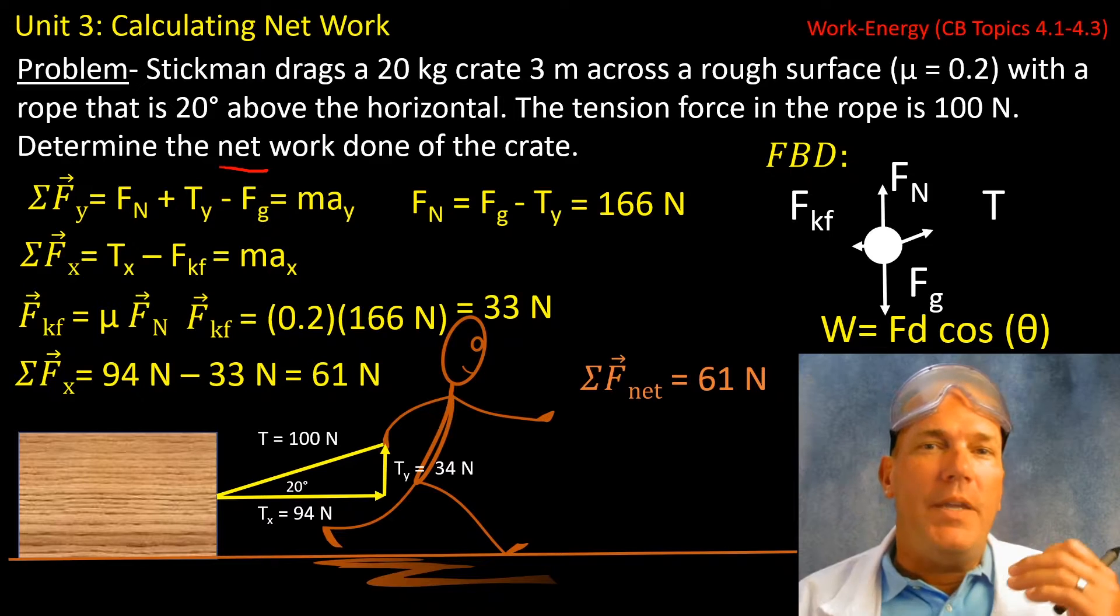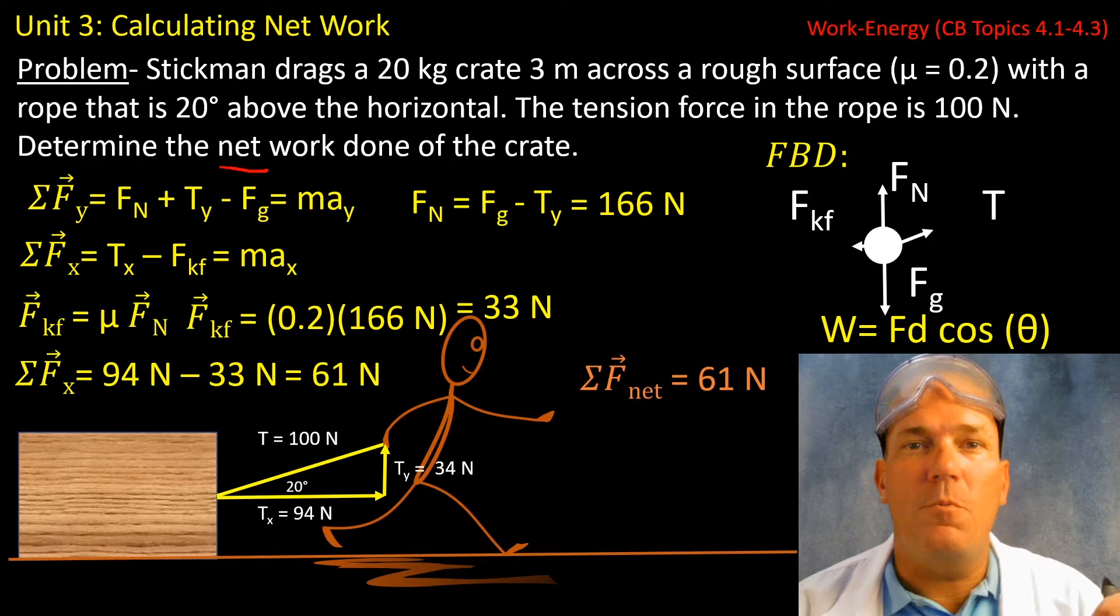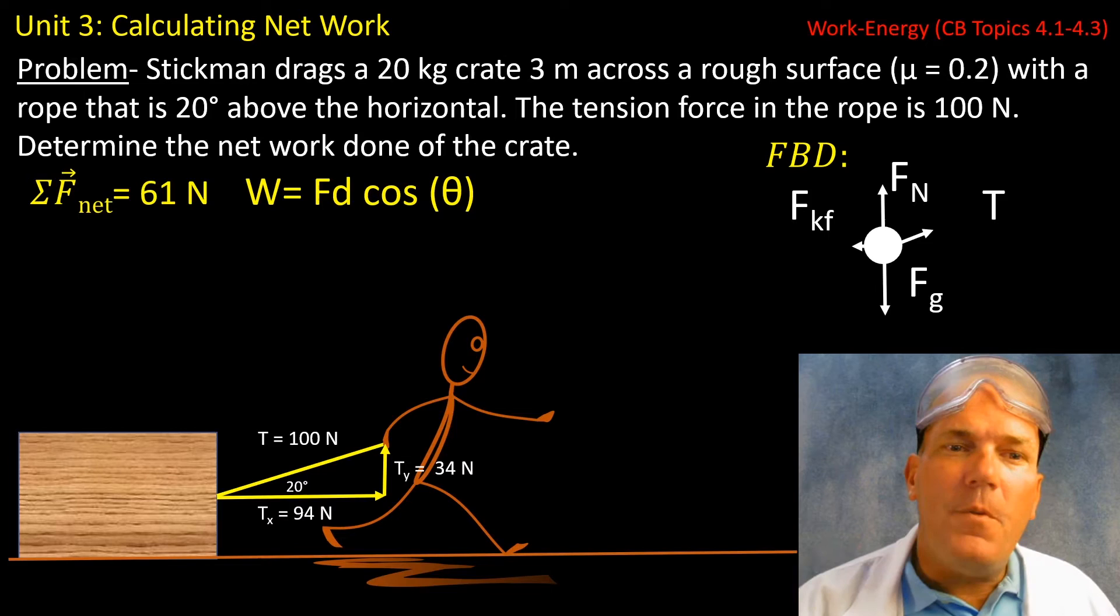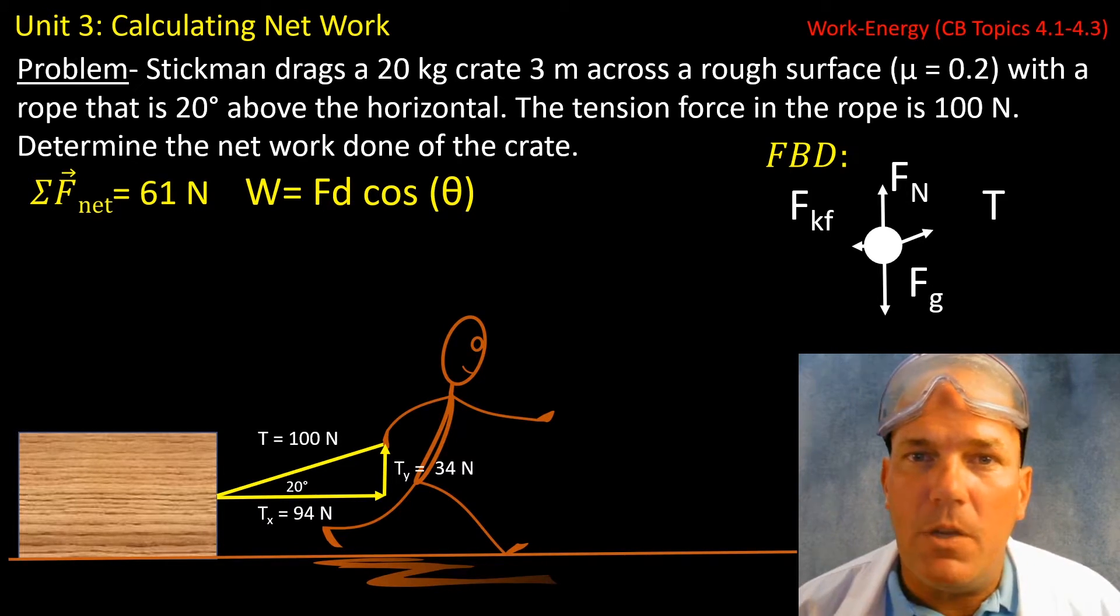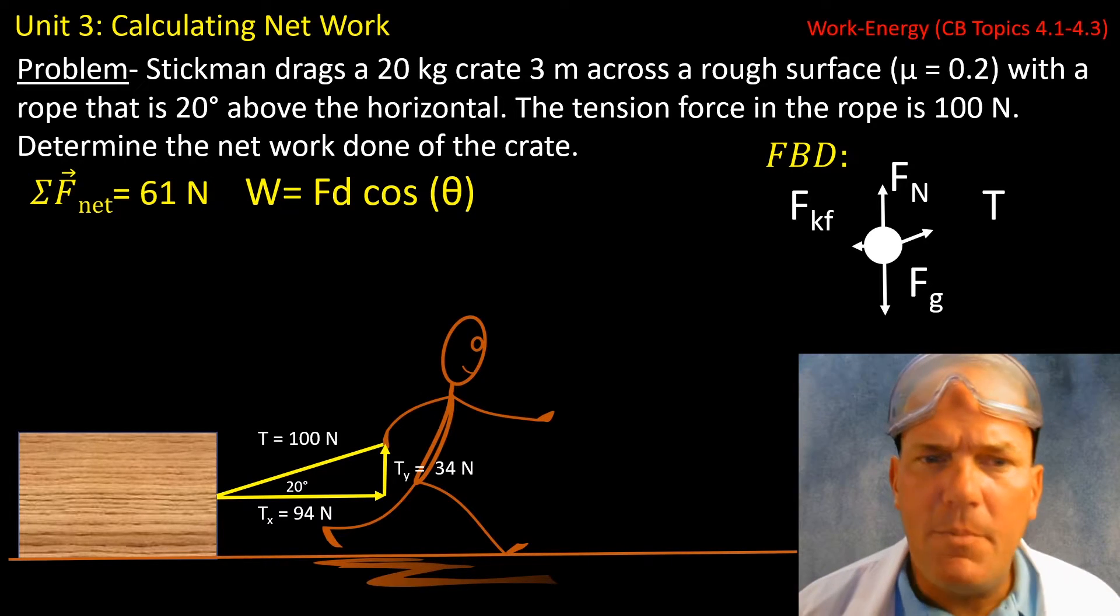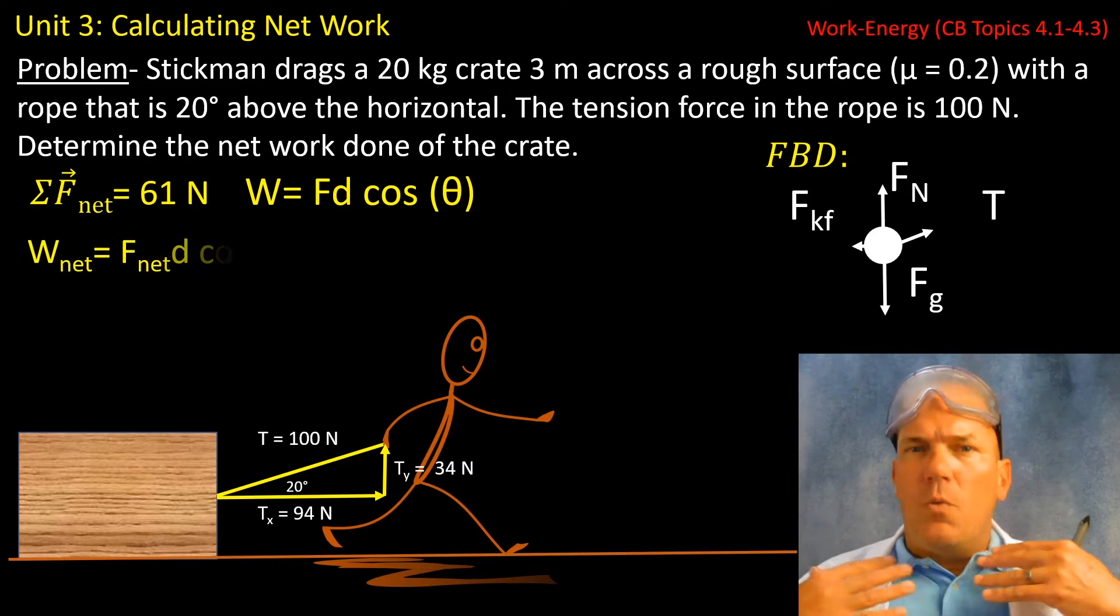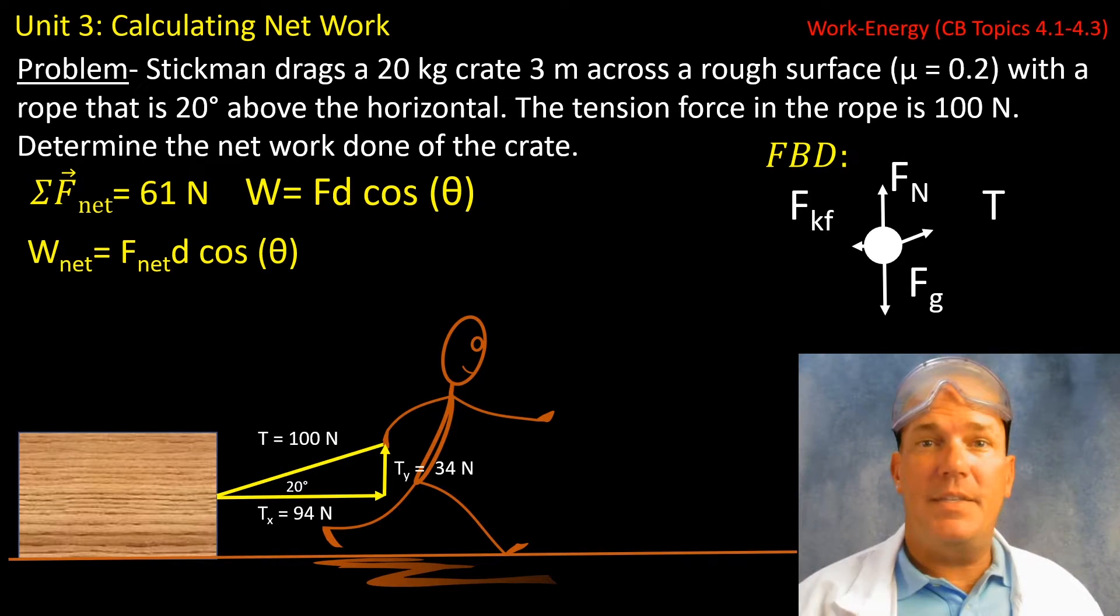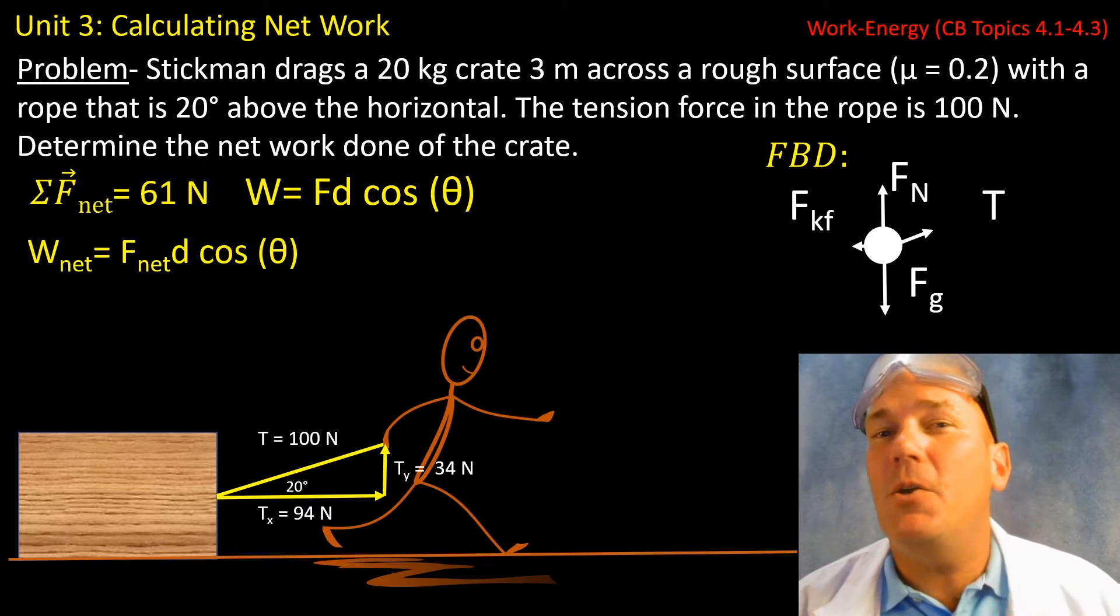Now we can take this net force and use it to figure out the net work. Let me show you how. If you take the net force, you can easily use that to calculate work because you've done a lot of the work already. In other words, we've already summed forces and resolved forces. So work net is nothing more than the force net multiplied by the distance of the displacement multiplied by cosine theta.